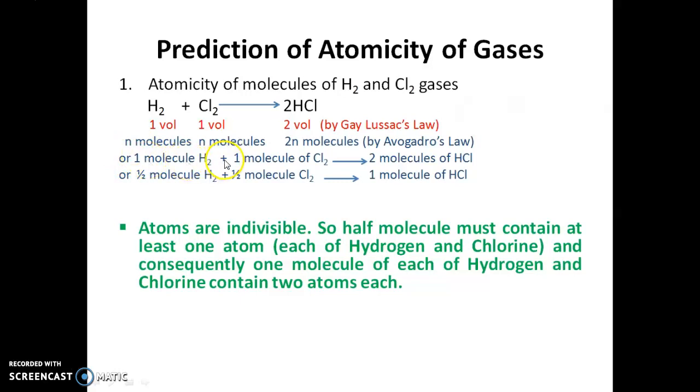So, one molecule of hydrogen reacts with one molecule of chlorine gives you two molecules of HCl. So, half molecule of hydrogen and half molecule of chlorine will give you one molecule of HCl.